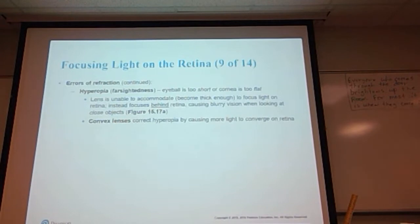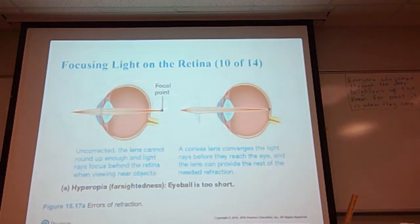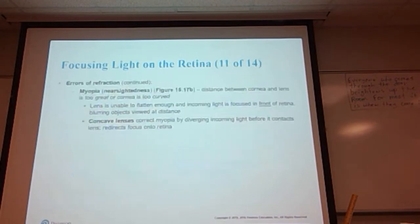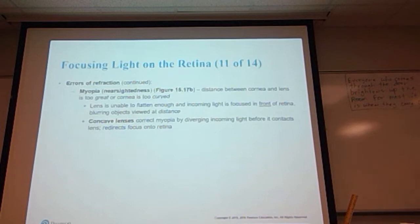Convex lenses correct hyperopia by causing more light to converge on the retina — the focal point is way back, so you put a corrective converging lens to move the focal point onto the retina. Myopia, or nearsightedness — the distance between the cornea and the lens is too great or the cornea is too curved. The lens is unable to flatten enough and incoming light is focused in front of the retina. Concave lenses correct myopia by diverging the incoming light before it contacts the lens, redirecting focus onto the retina. People who are nearsighted can see things close up but have trouble with distance vision.